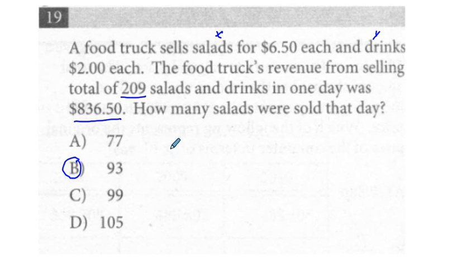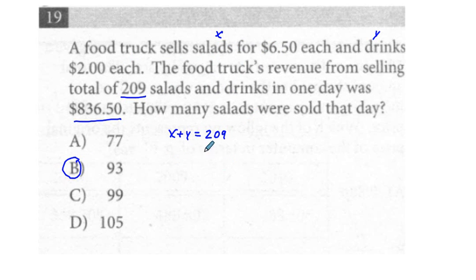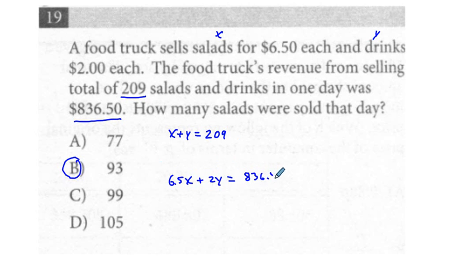I hope that was well under a minute or just under a minute. But I'm going to go now and explain how we came to all of these. We have our salads and drinks — they're going to be x plus y equals 209. That's our first equation based on the total amount. Our second equation is going to be 6.5x plus 2y equals 836.5.